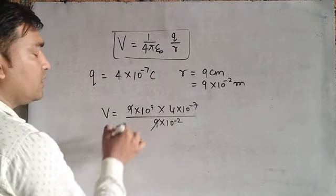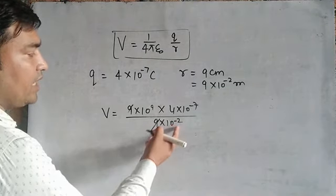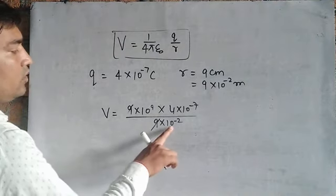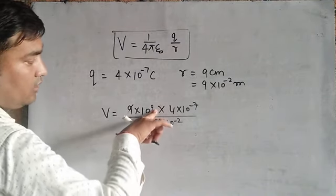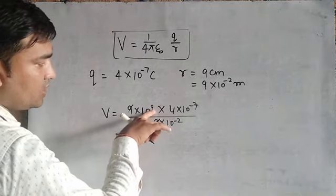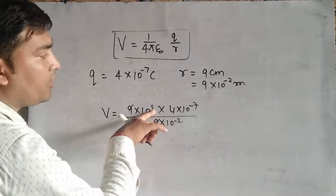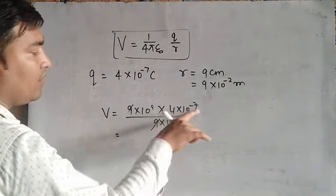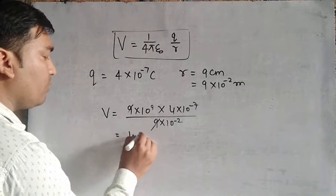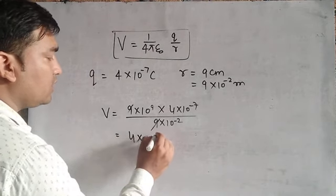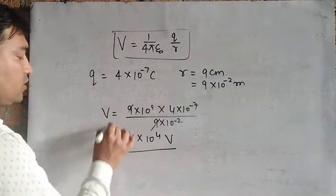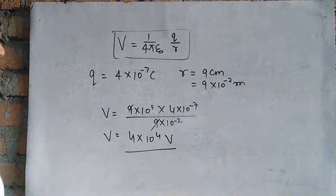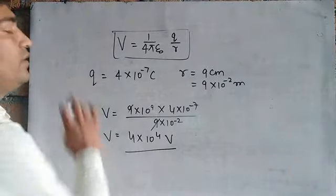Cancel the 9. The 10 to the power minus 2 becomes plus 2 when taken to the numerator. So we have 10 to the power 11, and 11 minus 7 gives 4 into 10 to the power 4 volts.